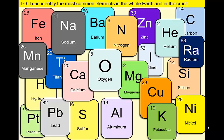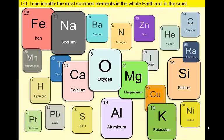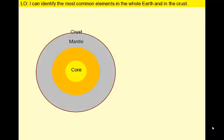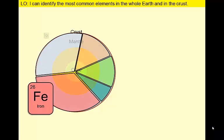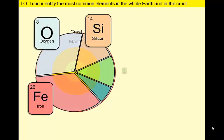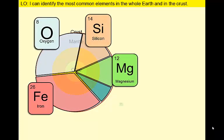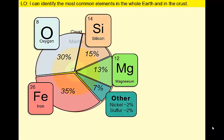Rocks and minerals are composed of combinations of these elements, but don't get too worried about learning all of the names. Just eight elements make up most of the rocks in the Earth's crust, and several of these are also key ingredients in Earth's core and mantle. Remember that Earth is differentiated into three major compositional layers, and most of these layers are made up of just four elements: iron, oxygen, silicon, and magnesium.